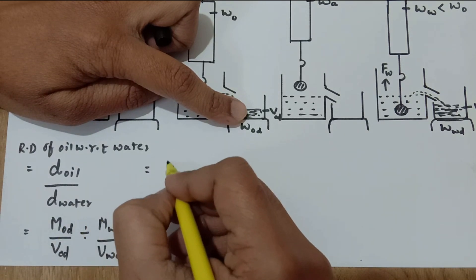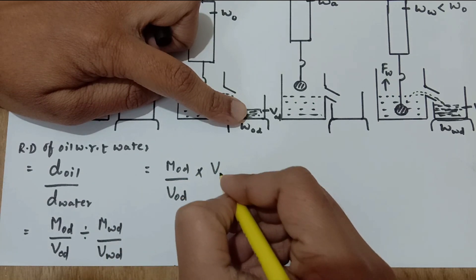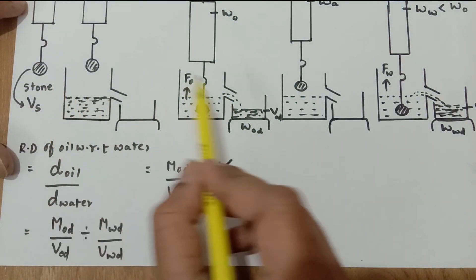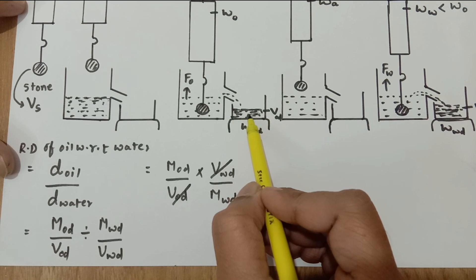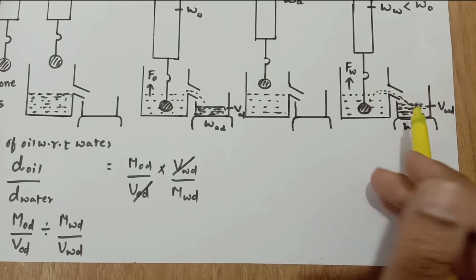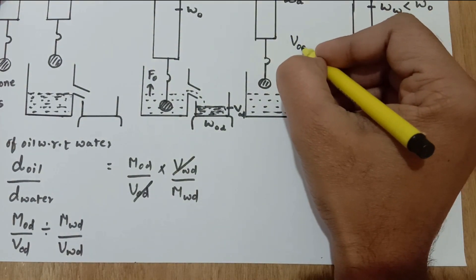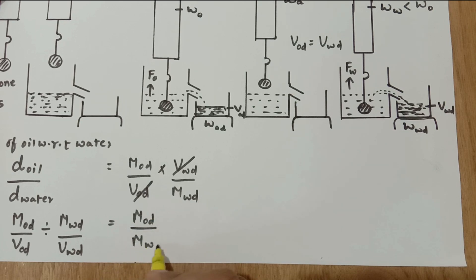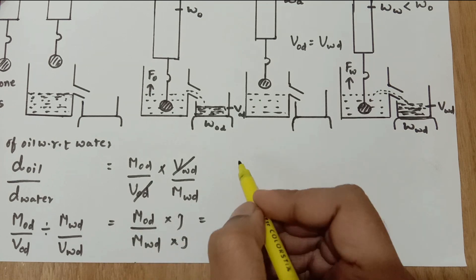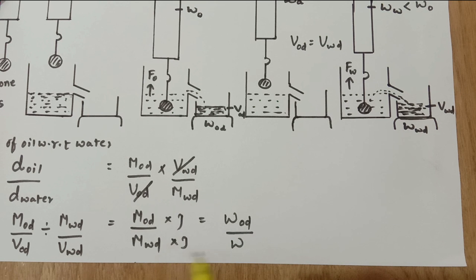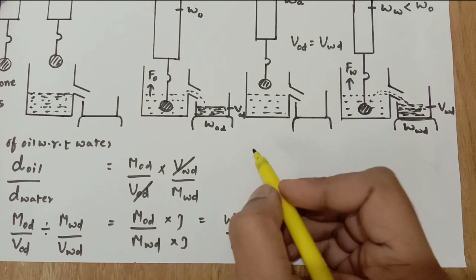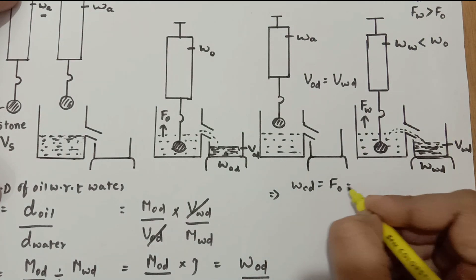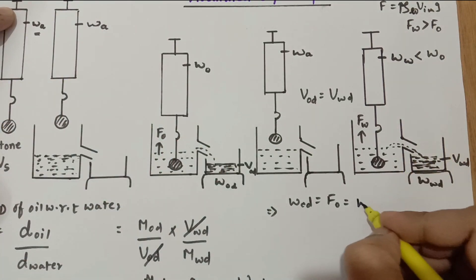This can be rewritten as mass of oil displaced over volume of oil displaced, multiplied by the reciprocal. Now, since the same stone is immersed in two different liquids, the volume of liquid displaced equals the volume of the stone in both cases. Therefore, volume of oil displaced equals volume of water displaced, and they cancel out. This leaves us with mass of oil displaced divided by mass of water displaced, multiplied by g over g — which gives us weight of oil displaced divided by weight of water displaced. By Archimedes' principle, weight of oil displaced equals the upthrust by oil, which equals weight in air minus weight in oil: Wa minus WO.